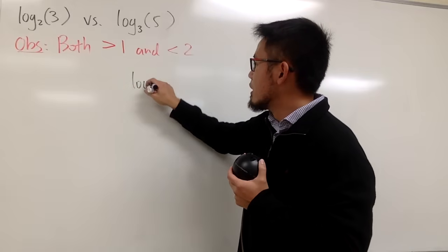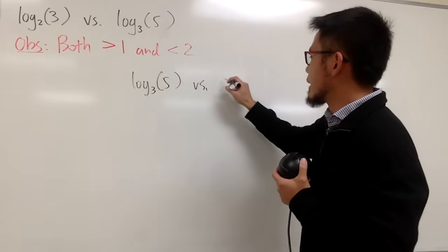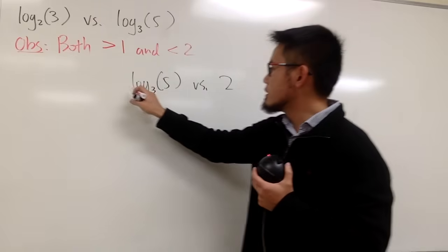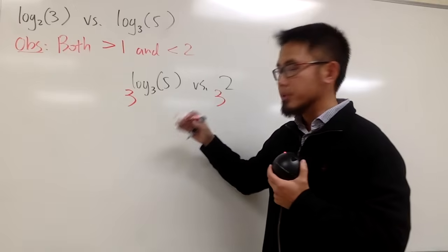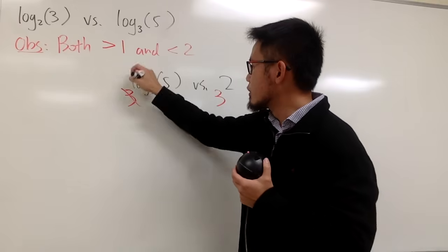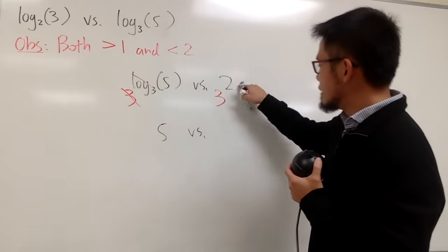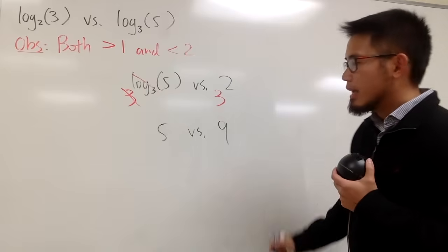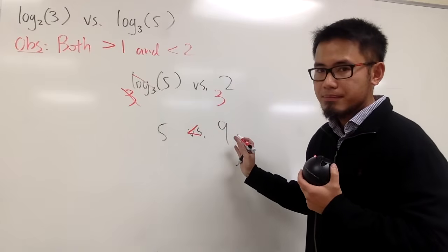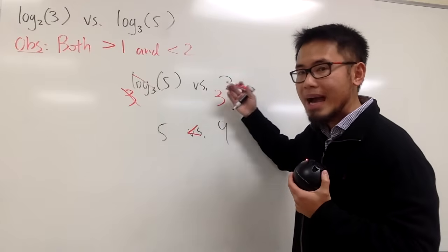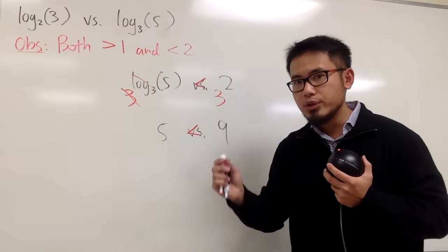So suppose if you want to compare log base 3 of 5 versus 2. This is one of the things that you can do. You can just take 3 to this power and 3 to this power, because maybe the log base 3 is bothering you, and you can cancel this out. And you can really just compare 5 versus 3 to the second power is 9. And of course, right now, we can say 5 is less than 9.